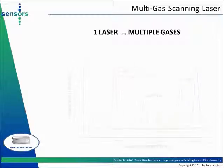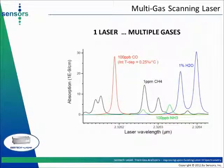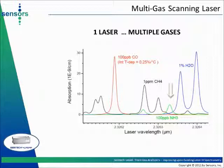A benefit of collecting 200 data point spectra instead of single wavelength intensity measurements is that more than one gas can be measured using a single laser. In this example, using a laser set at about 2.33 microns, a single scanning laser can be used for the simultaneous measurement of trace carbon monoxide, trace methane, trace ammonia, and percent-level water vapor. Many more examples can be proposed, as non-fibered lasers provide access to spectral information in the 0.6 to 3.3 micron spectral range using tunable diode lasers.